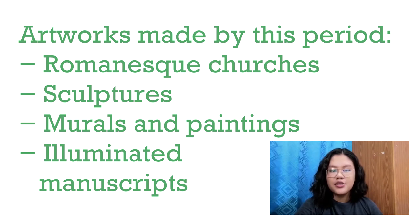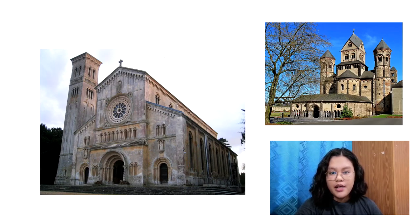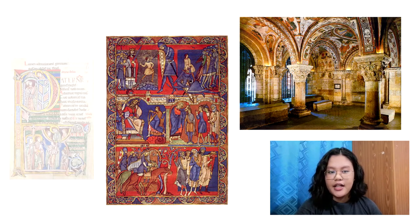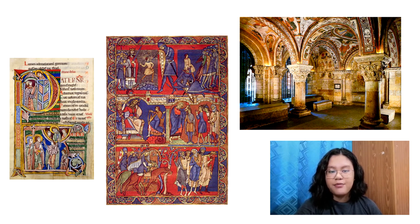Artworks from this period include churches and cathedrals with round arches and stylized architecture, sculptures representing biblical history and church doctrine, murals and paintings erected on church walls, pillars and columns resembling sculptures in style, illuminated manuscripts focused on Bible material, and metalworks from precious metals frequently produced to house relics such as body parts of a saint or objects associated with Christ like the cross.